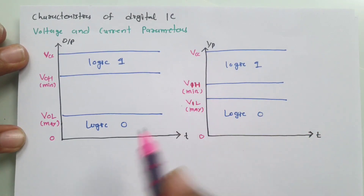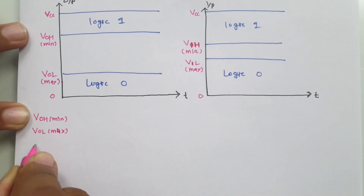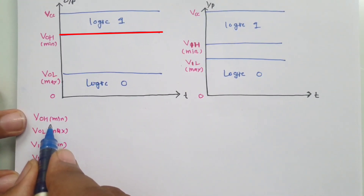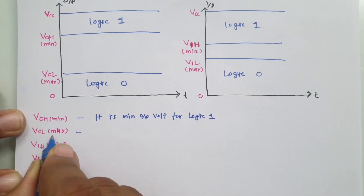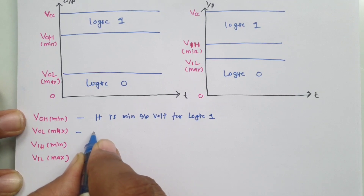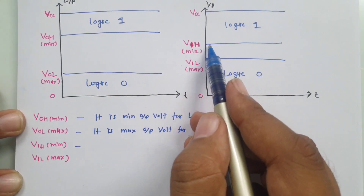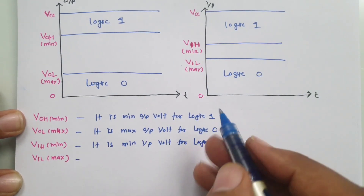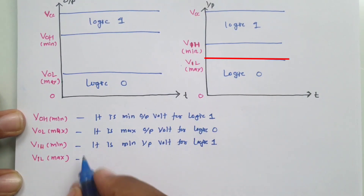So those are the four different voltages. VOH is the minimum output voltage treated as logic 1. VOL max is the maximum output voltage treated as logic 0. VIH is the minimum input voltage for logic 1. VIL max is the maximum input voltage for logic 0.